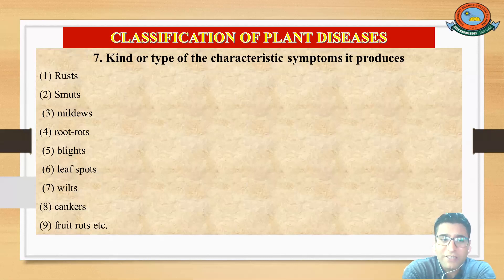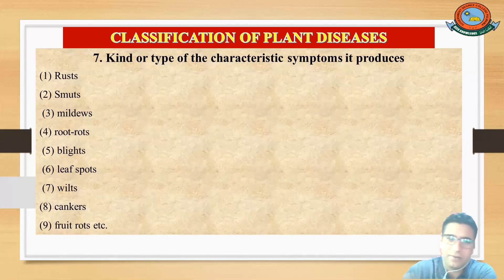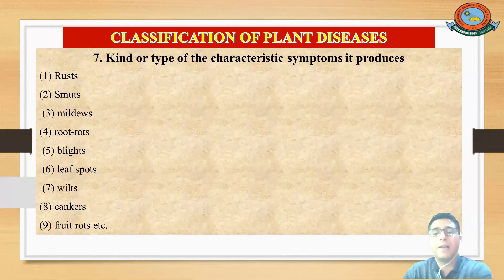One more classification of plant disease is done based on the kind or type of characteristic symptoms it produces. Depending on the characteristic symptom a particular disease causes, we can also classify diseases as rust, smuts, mildews, root rots, blights, leaf spots, etc. These are all symptoms that we will learn from symptomology.